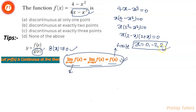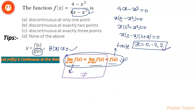आपका ये doubt हो सकता है कि कैसे पता चलेगा कि इन्हीं तीनों points पर function defined नहीं है। इसके लिए हम इस concept का use करेंगे: किसी भी point पर जब आप function का left hand limit और right hand limit calculate करोगे, तो वो आपस में equal नहीं आएगा। इससे confirm होता है कि ये function इन सारे points पर defined नहीं है — यानी function is discontinuous at exactly three points।